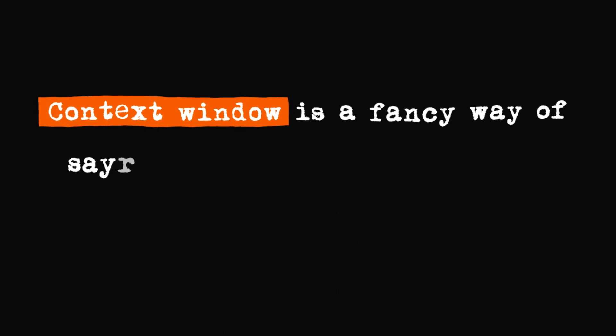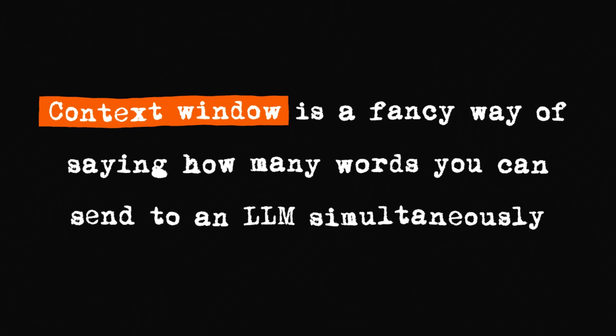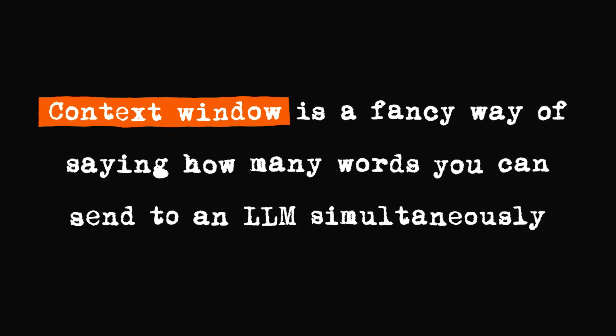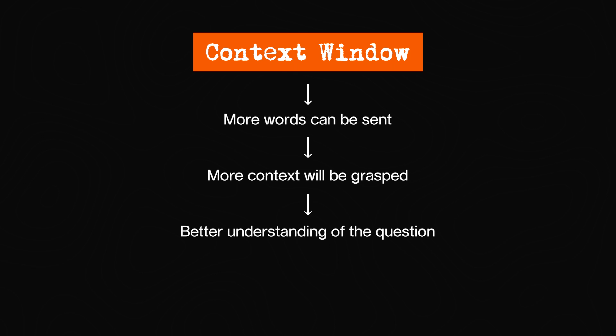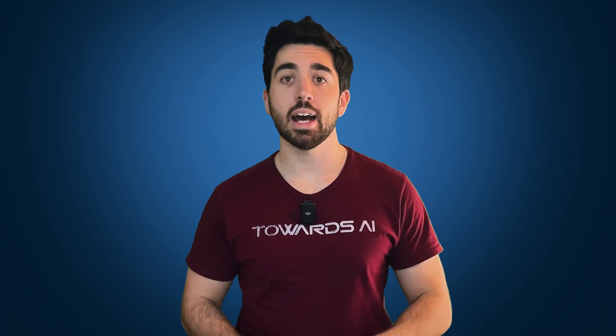But first, we also need some context to understand what they did. Context window is a fancy way of saying how many words you can send to an LLM simultaneously. The bigger window you can have, the more words you can send, the more context it can grasp, and thus the better understanding of your question to give an appropriate answer. We want to send the model as much information as possible and let it figure out how best to meet our needs.